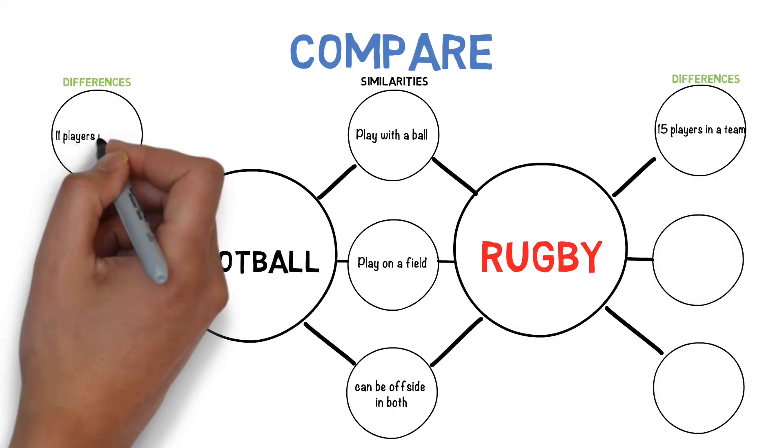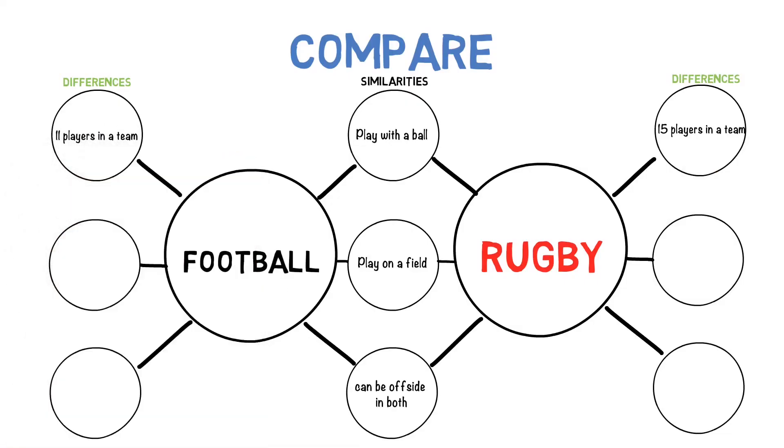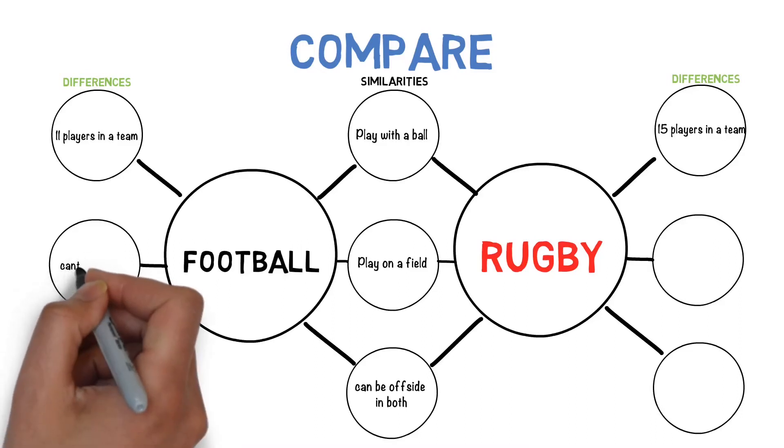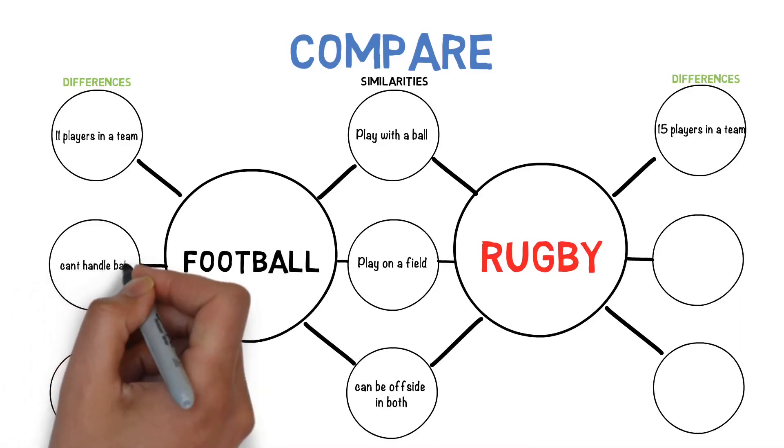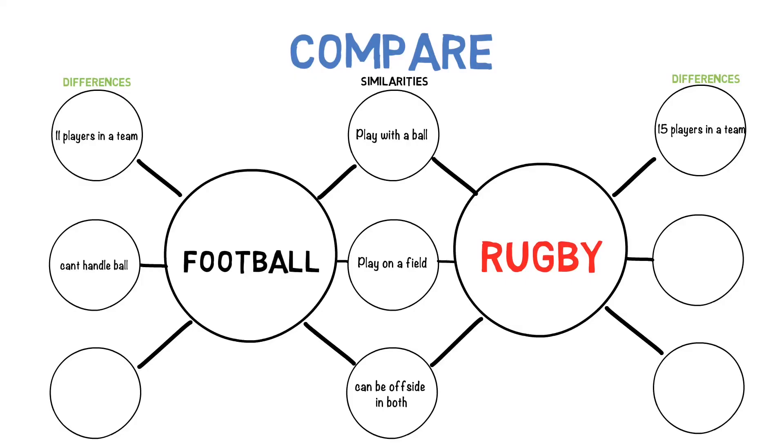And basically they would form your paragraphs. Obviously it would be a science question. So in football you're 11 players in a team, however in rugby you have 15 players in a team. In football you can't handle the ball but in rugby you can. And the idea is you should be listing these things out where you're looking at the differences and the similarities. You don't have to write a conclusion after like you do with an evaluate question.